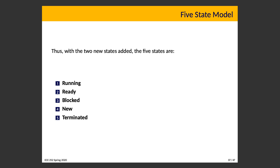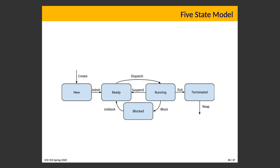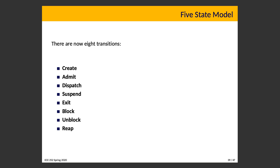With our five states — running, ready, blocked, new, and terminated — the transitions work as follows: a new process goes to the new state; when prepared to start it moves to ready; when the scheduler dispatches it, it moves to running; from running it could get blocked or be suspended, or it could finish and go to exit. There are additional exit transitions not shown in the diagram — a process in the ready or blocked state could transition directly to terminated if killed. The eight transitions are: create, admit, dispatch, suspend, exit, block, unblock, and reap.